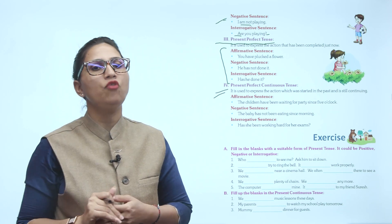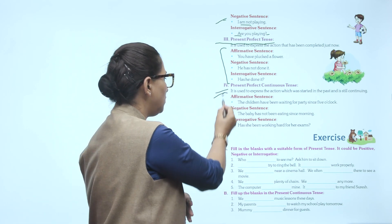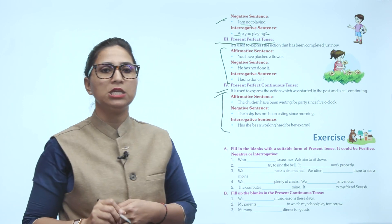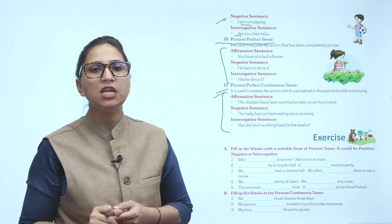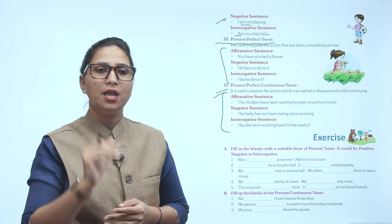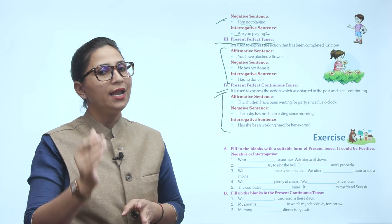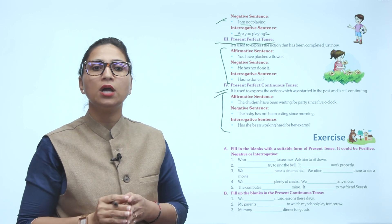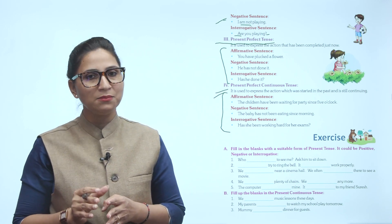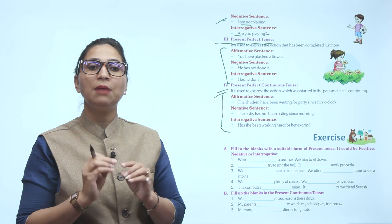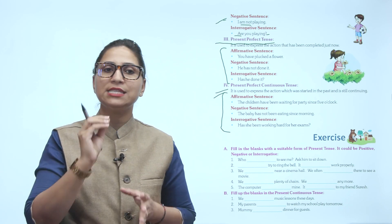Here also, we categorize based on sentence forms: affirmative, negative, and interrogative. Affirmative: the children have been waiting for the party since five o'clock. Negative: the baby has not been eating since morning. Interrogative: has she been working hard for her exams?